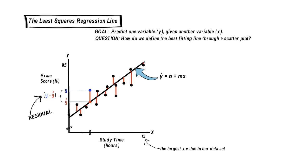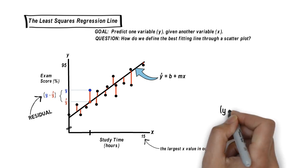So here's what's done to get what we'll define as the best fitting line. First, we calculate each residual. Or another way to say that is we calculate y minus y hat for each data point.